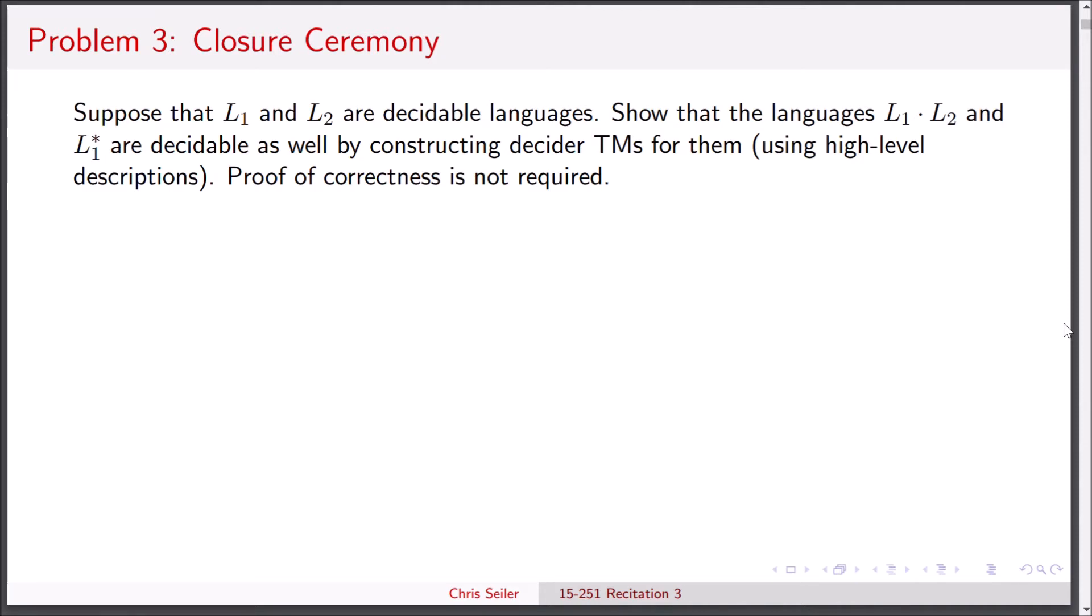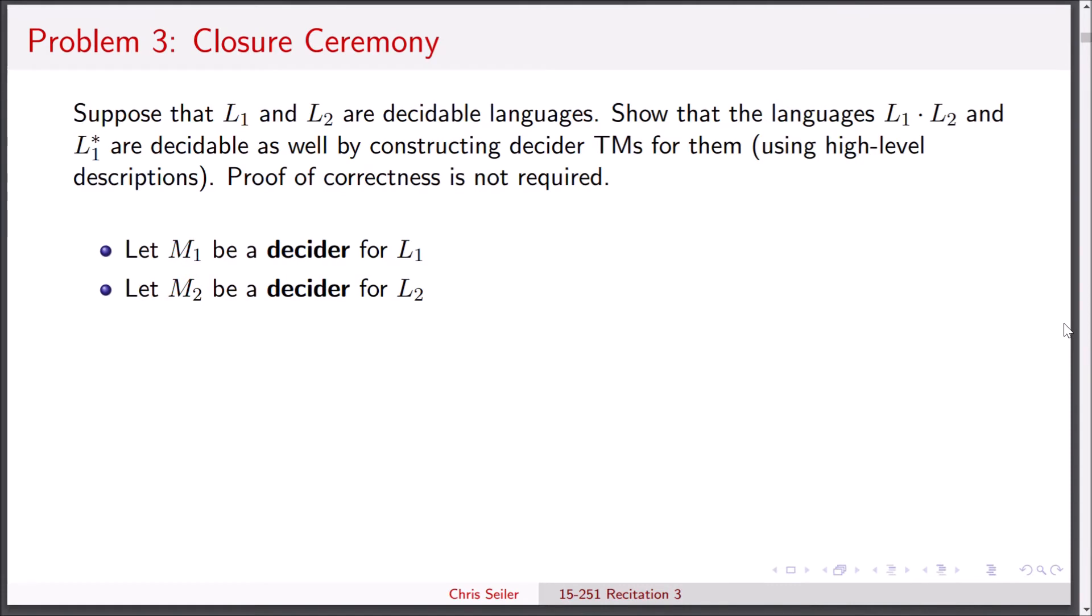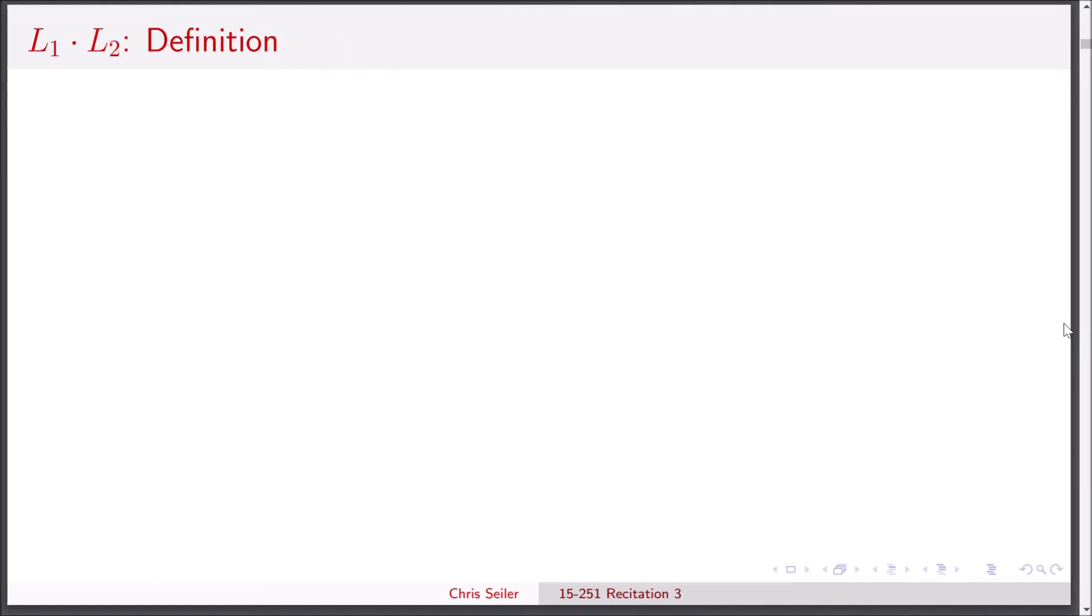Since L1 and L2 are decidable, let's just go right ahead and assume that we have deciders for them, M1 and M2 respectively. First, we're going to look at L1 concatenate L2. I encourage you to pause the video and try to figure this out for yourself first and then continue.